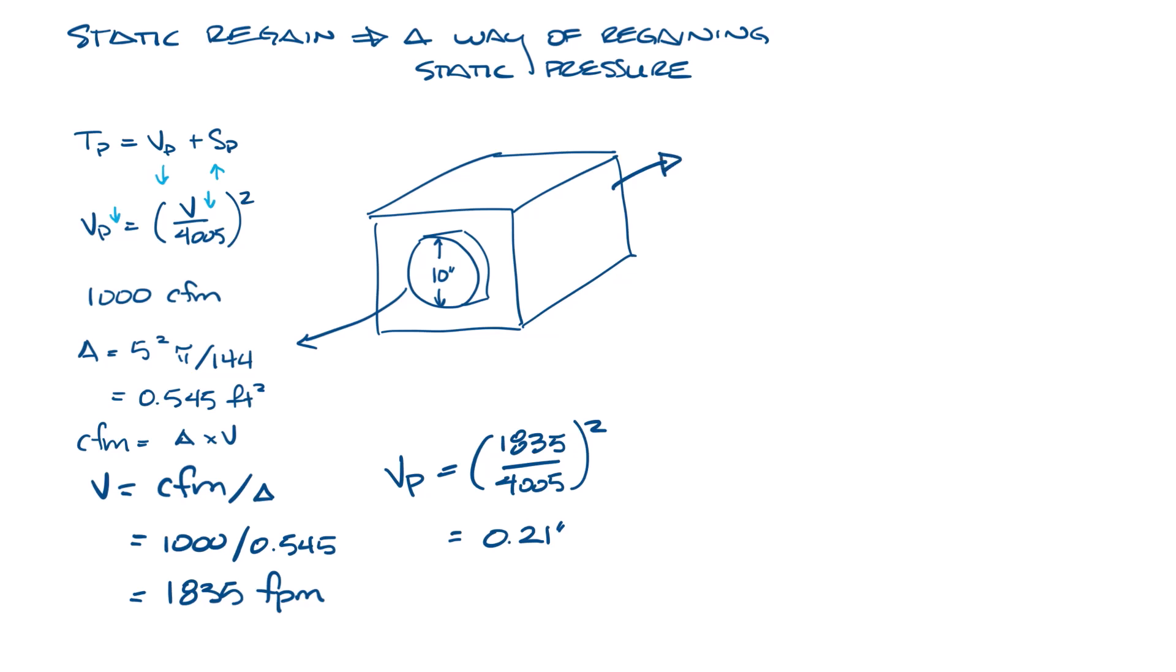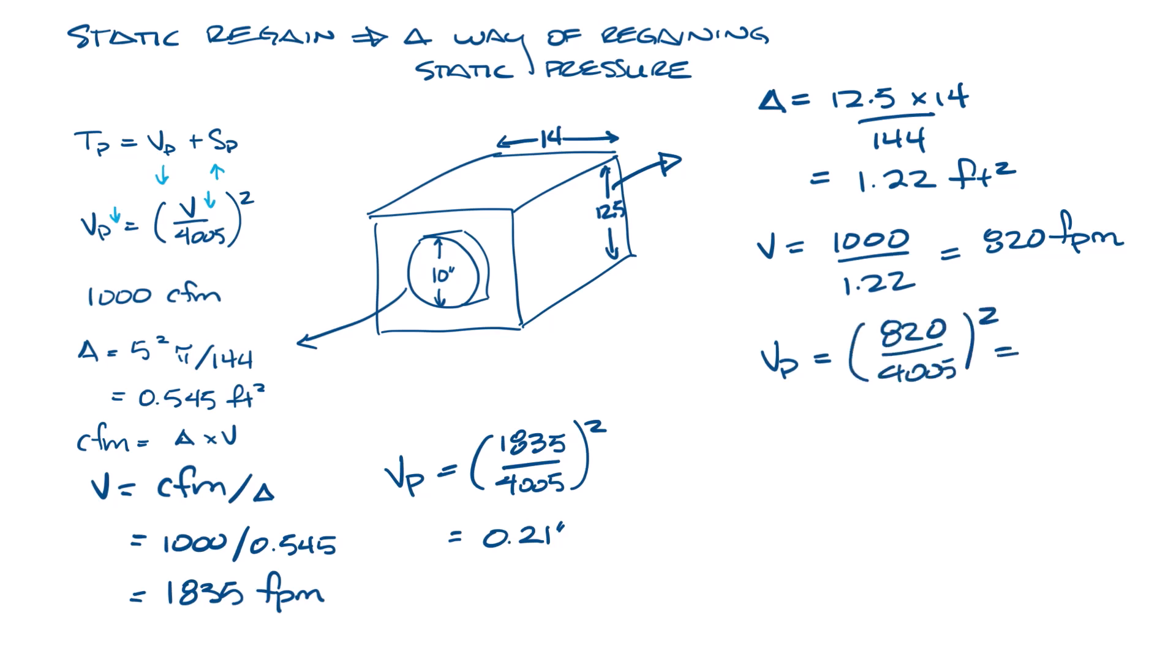Now let's look at the discharge side of the box. Let's say this box has a 12 and a half by 14 inch discharge. We do the math here. So the area is 12.5 times 14 divided by 144 to get into feet, which is 1.22 square feet. So velocity here is a thousand CFM divided by 1.22 gives us 820 feet per minute. Now let's put this in the velocity pressure equation and you get 820 divided by 4,005 squared is 0.04 inches.